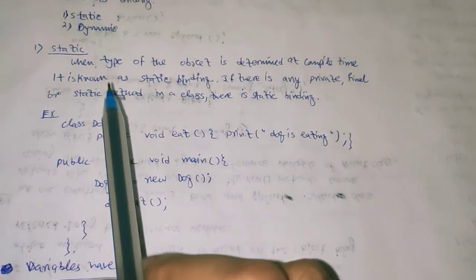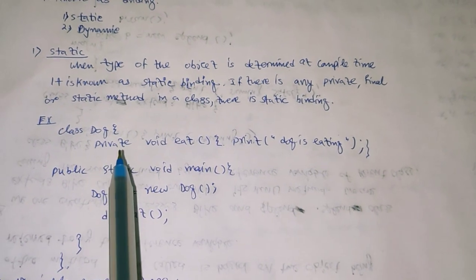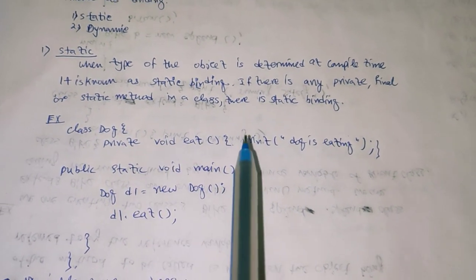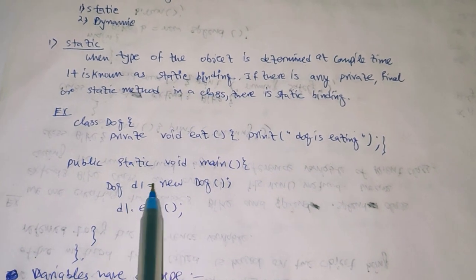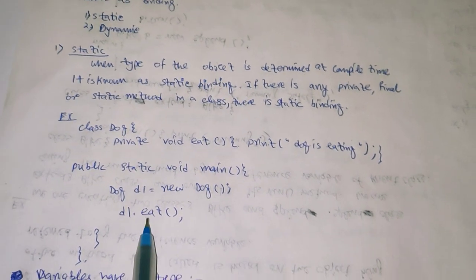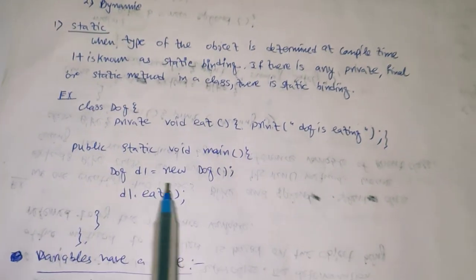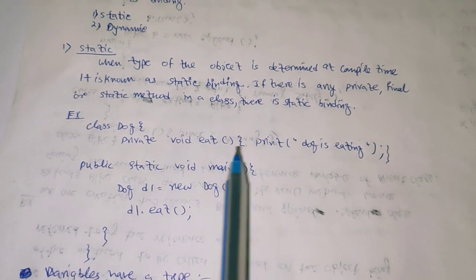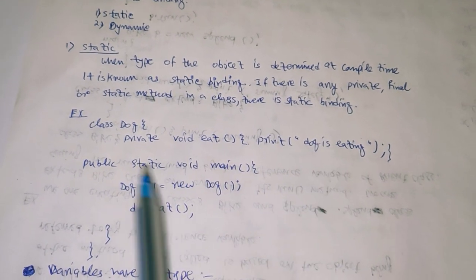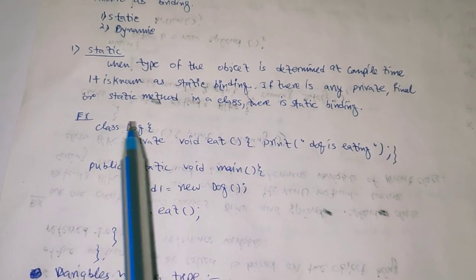For our static binding example, inside class Dog there is a private method void eat() that prints 'dog is eating'. Inside the main method, 'Dog d1 = new Dog()' and then d1.eat() is called. Whenever this method is called, the eat method will be called and 'dog is eating' will be printed.